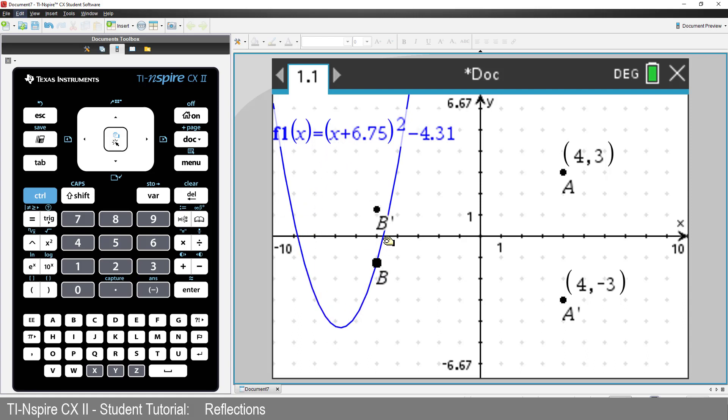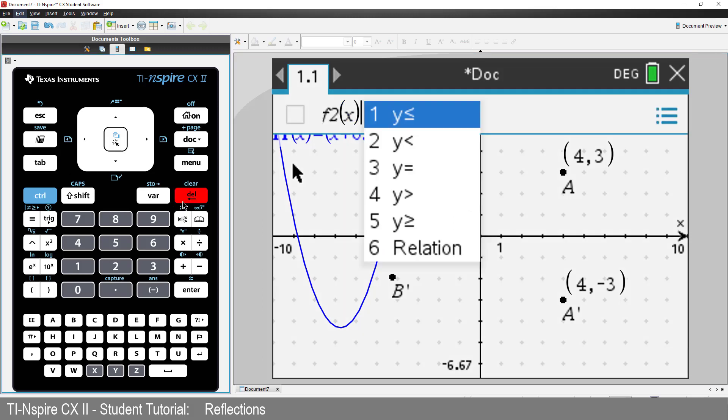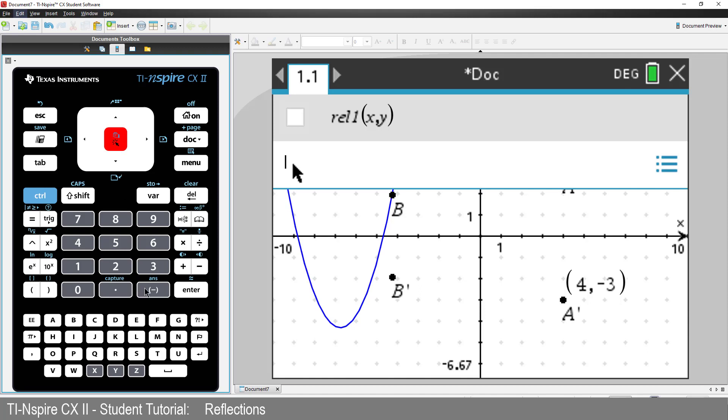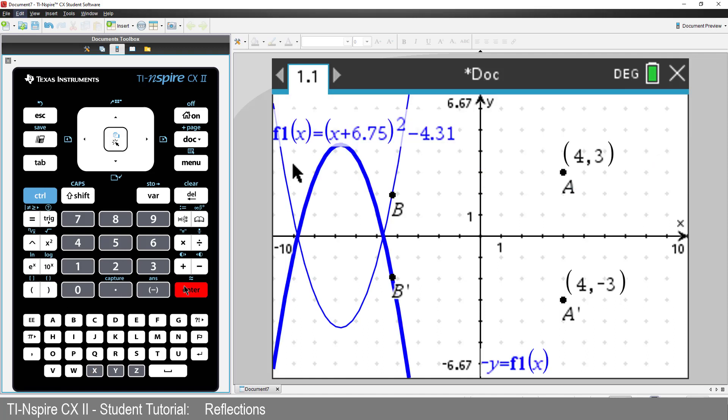So to reflect the entire graph, we just make the y values negative. There are two ways I can express this. I'll use the relational graphing tool and write negative y equals f1 of x. Now we've reflected the graph in the x-axis.